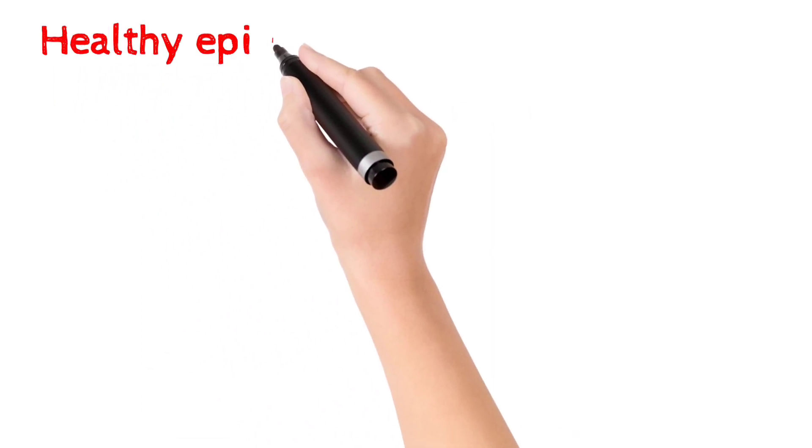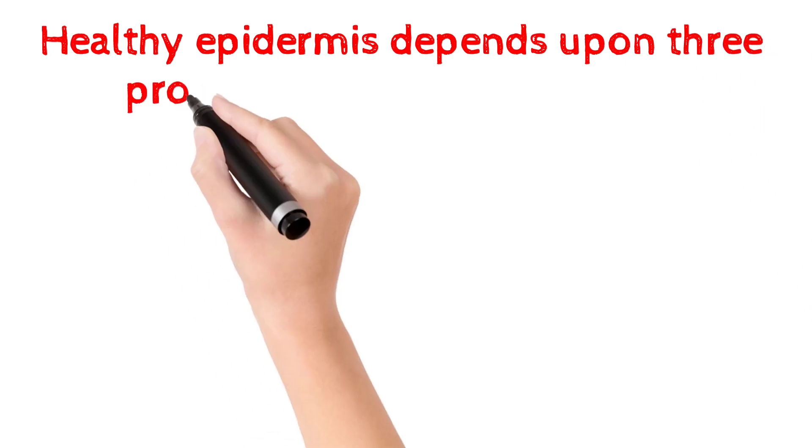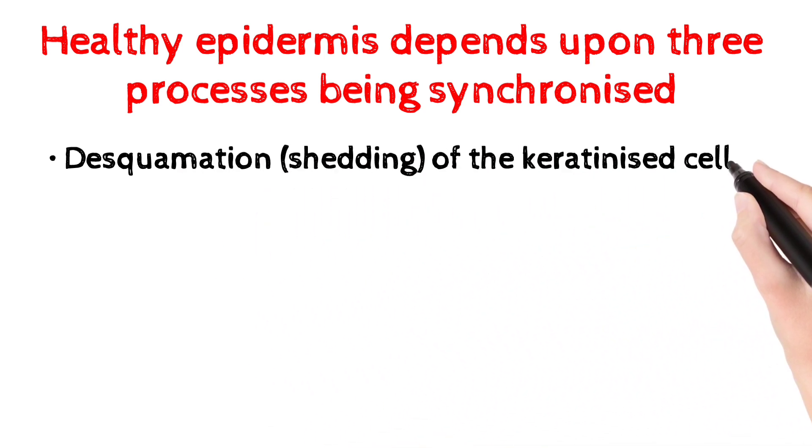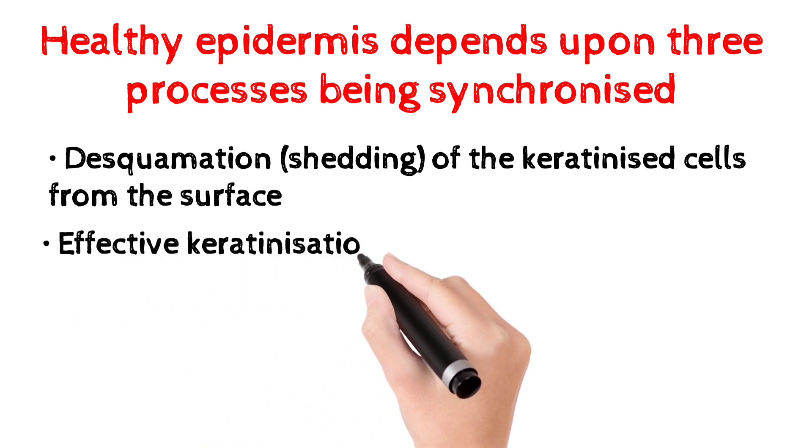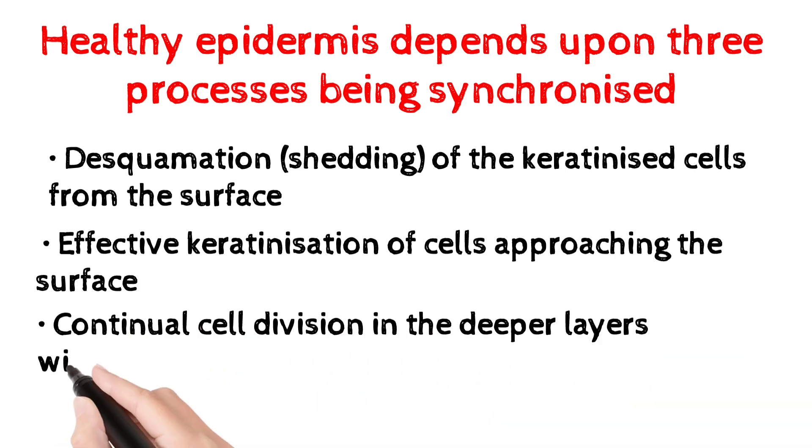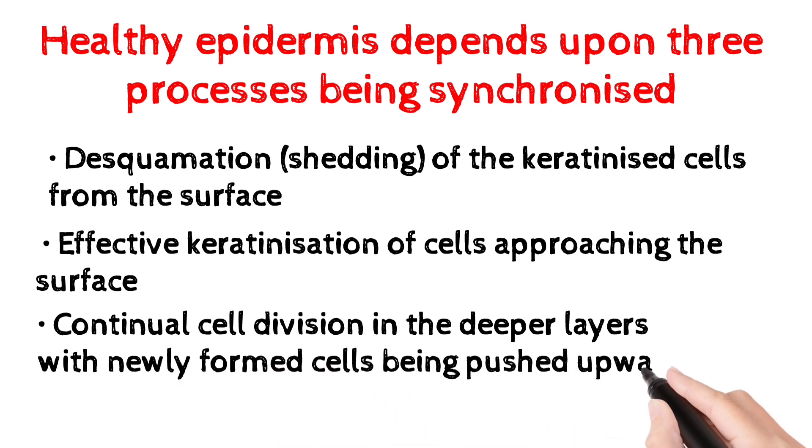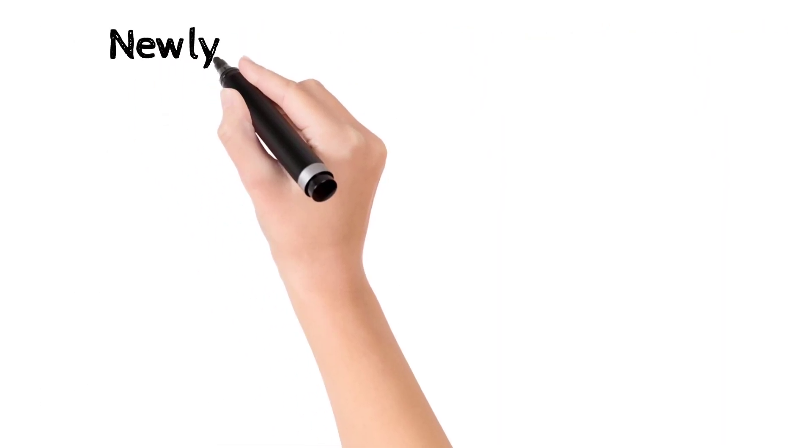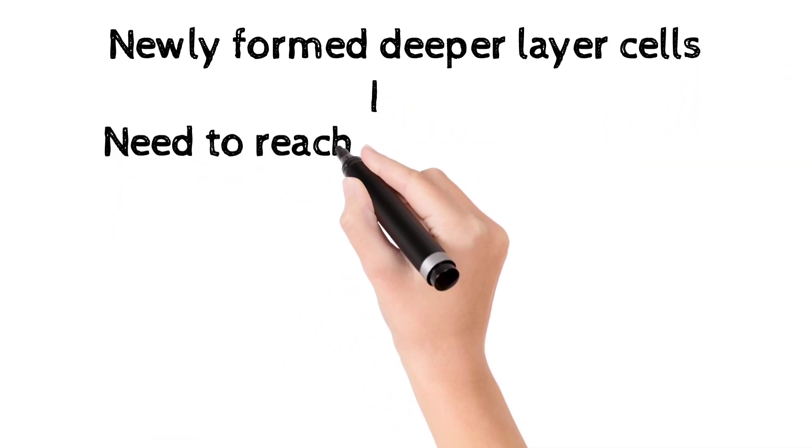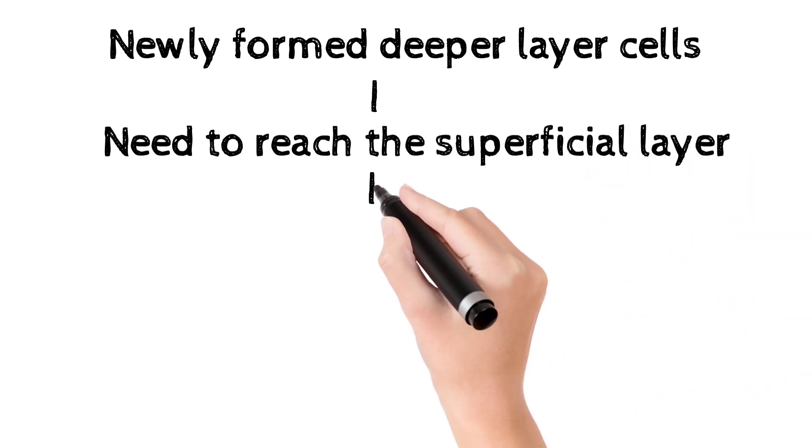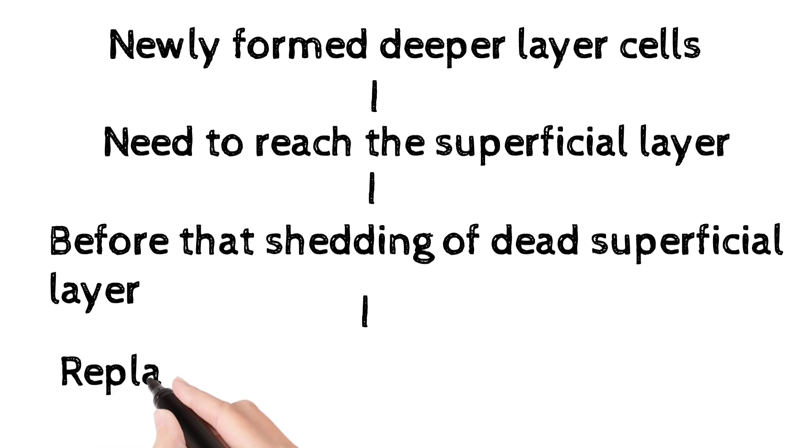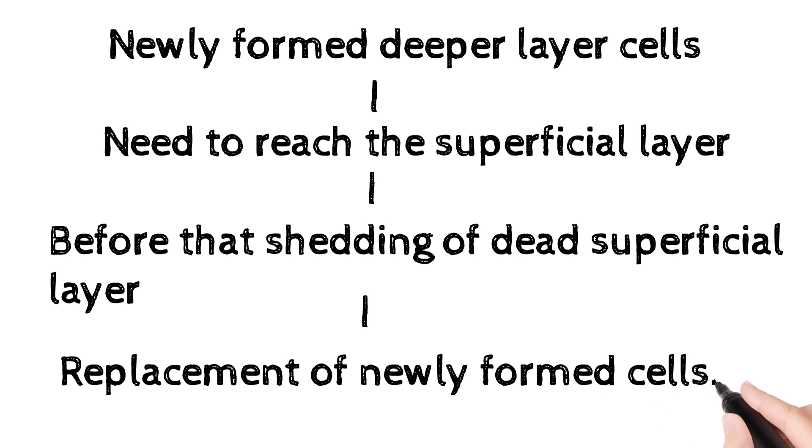In healthy epidermis, three processes occur in a synchronized manner. First is desquamation of keratinized cells from the surface. Next is effective keratinization of cells approaching the surface. Third is continual cell division in the deeper layers, with newly formed cells being pushed upwards to the surface. Cells formed in the deeper layers must reach the superficial layer before the shedding of dead superficial layer occurs.